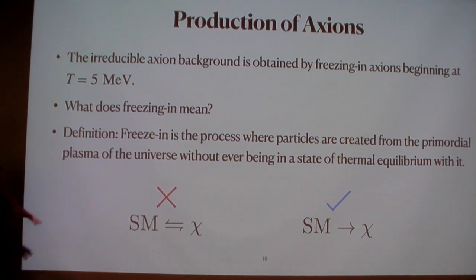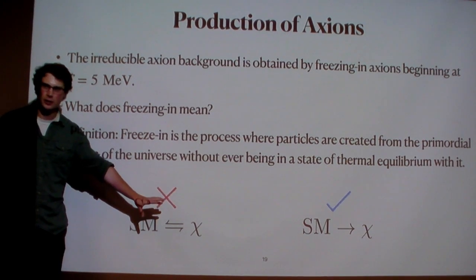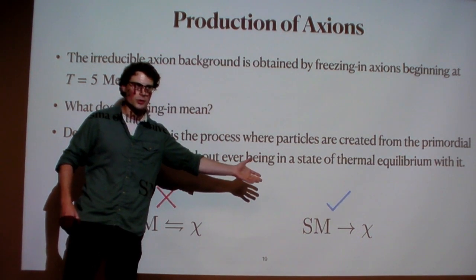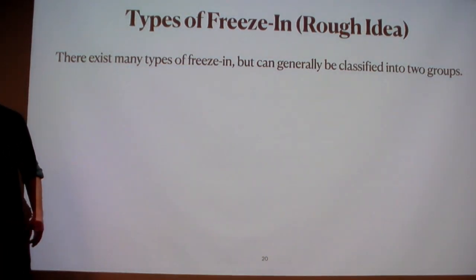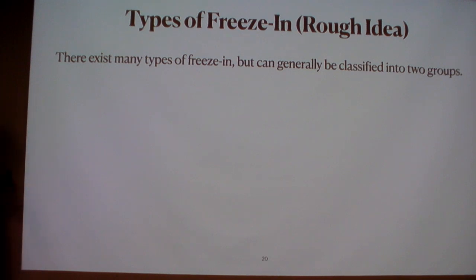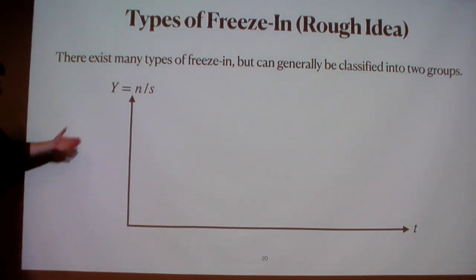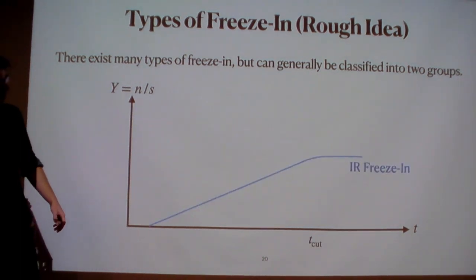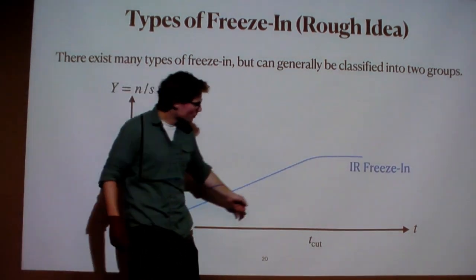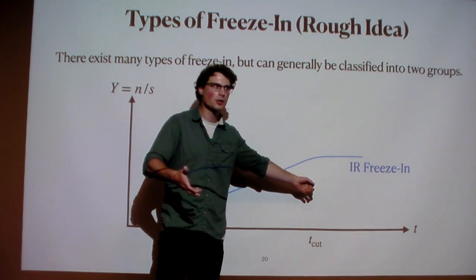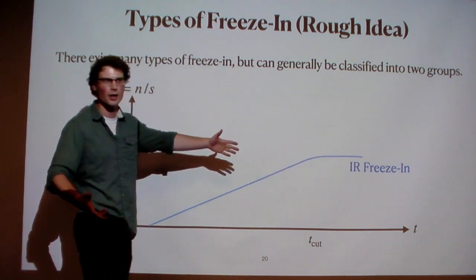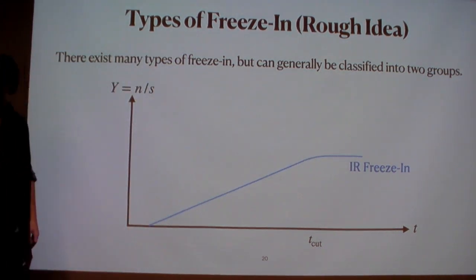Freeze-in can be classified into two different classes. If I plot the yield — the number density over entropy density — as a function of time, there is IR freeze-in, which is slowly built up over time but then cut off by some kinetic or chemical cutoff. In other words, if there's not enough energy in the thermal plasma to produce these particles anymore, it will be cut off as temperature cools down. There's also UV freeze-in, where the freeze-in process is sensitive only to the highest energy physics — at the beginning of reheating, which for me means 5 MeV.